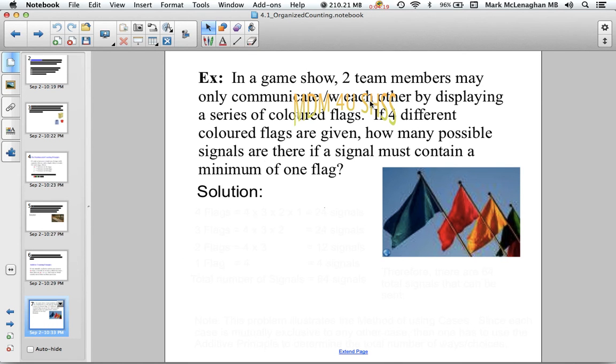Here we have a game show. Two members in the game show can only communicate using displays of colored flags. They have four different colored flags. We want to figure out how many different possible signals they can have to communicate with each other, assuming they have a minimum of one flag.